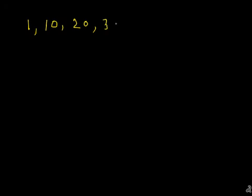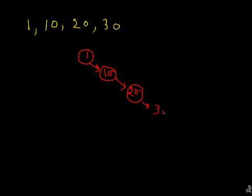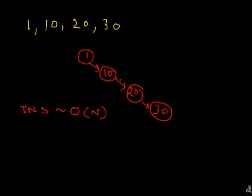Suppose the list of elements being added is in increasing order: 1, 10, 20, 30. The tree we build will be heavily skewed — we start with 1, then 10 becomes the right child, 20 becomes the right child of 10, and 30 becomes the right child of 20. It becomes almost like a linked list, so insertion has a complexity of O(n). This is the skew problem.